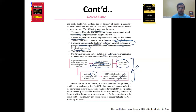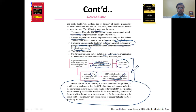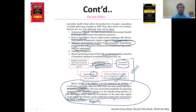The conclusion: 'Hence, closure of industry is not the solution as it will lead to job losses, affect the GDP of the state and country, and affect downstream industries' — see how various dilemmas marked in the case are used. 'The issue can be better handled by incorporating environmentally sustainable practices in the manufacturing practices of the unit. Regular social audit of the industry can be conducted to ensure safe practices are being followed.' One more line could have been added: 'Hence, the steps listed above present a holistic solution to the given case.'